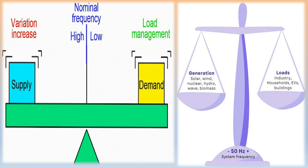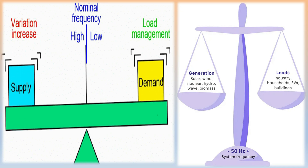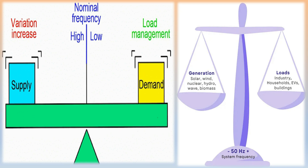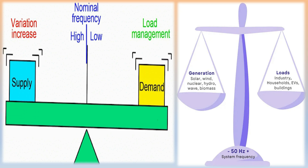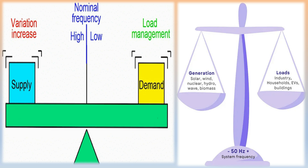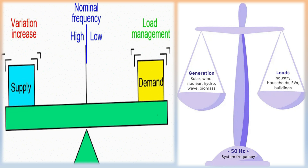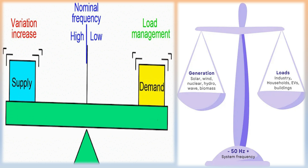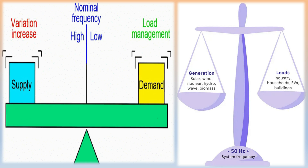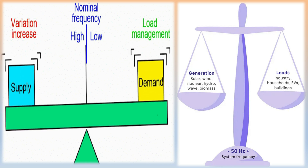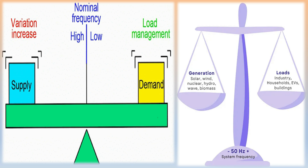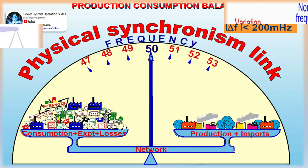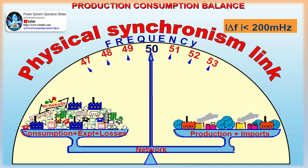Regulation pause: it indicates that regulating mode is temporarily inhibited. The regulation will be resumed automatically if conditions improve before the timeout, otherwise it will suspend. Regulation suspend: it indicates that regulating mode is permanently inhibited. To start it again, AGC must be reactivated by the generation dispatcher.